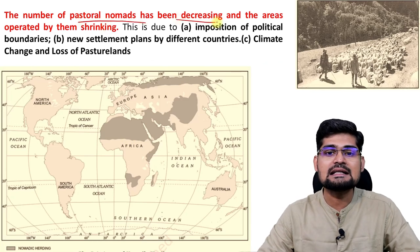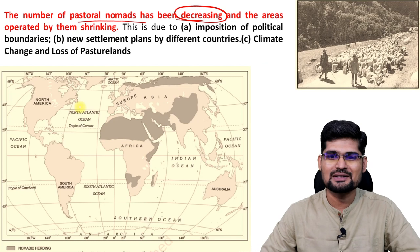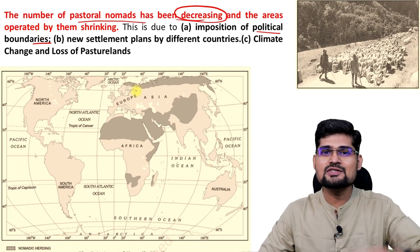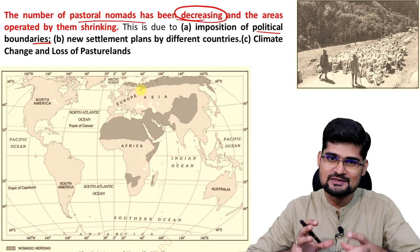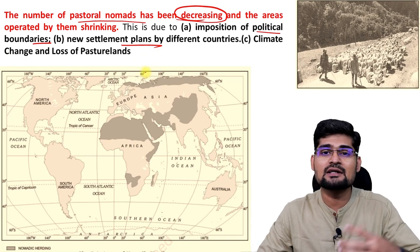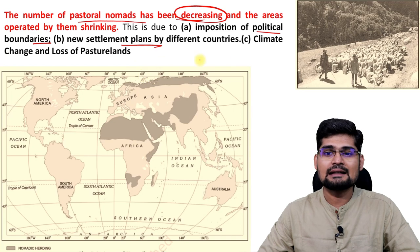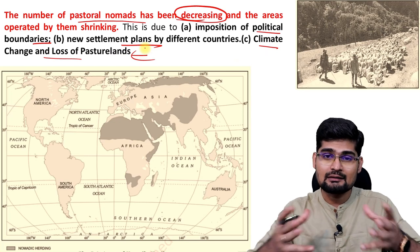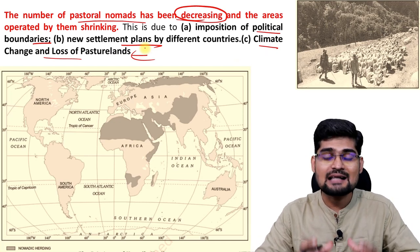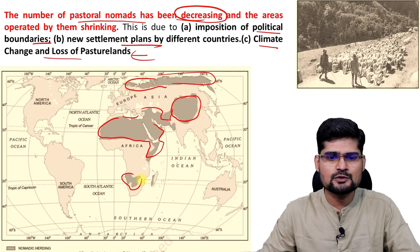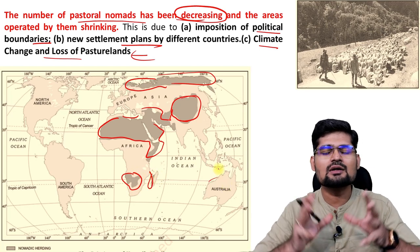The number of pastoral nomads has been decreasing across the world. The reasons for that are: imposition of political boundaries making movement across regions difficult; new settlement plans where newer areas are taken up for developmental activities; and third, climate change and loss of pasture lands, a recent phenomenon in the Himalayan region as well as different mountain regions of the world. On the map, the concentration of nomadic herders is found in Africa, Middle East, Central Asia, North Asia, and some portions in southern Africa and Madagascar.